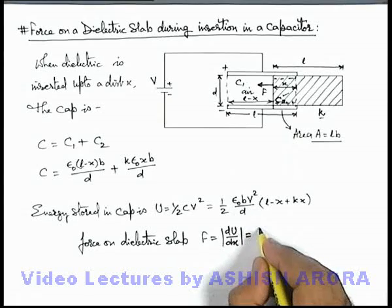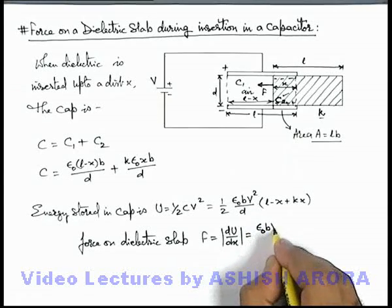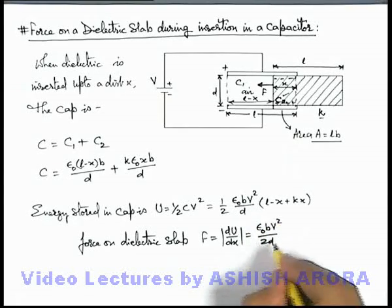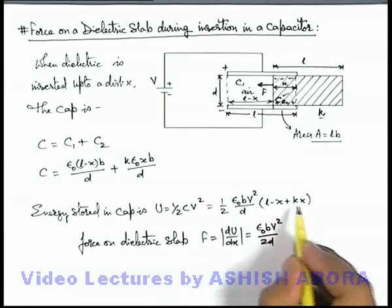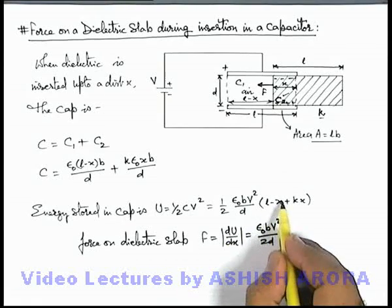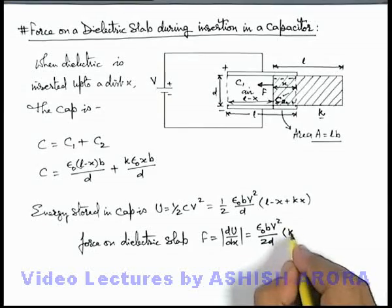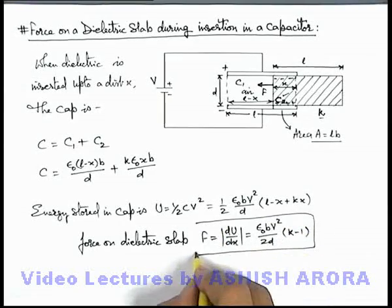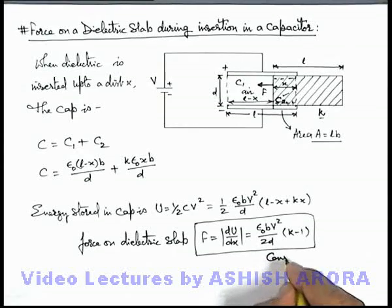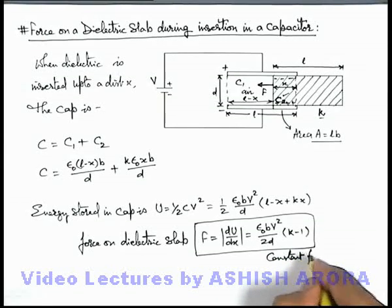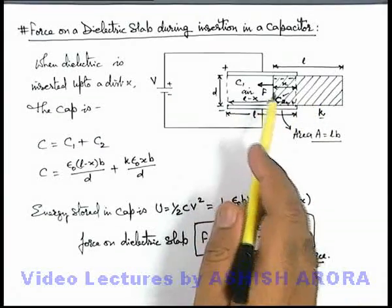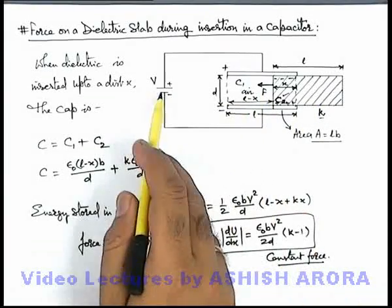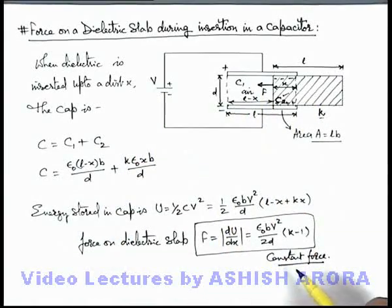If we differentiate it, you can see the result we are getting is epsilon not bV square by 2d. And differentiation of l becomes zero, and x becomes this minus 1 plus K, so it can be written as K minus 1. So this is the expression for the force, and you can see it is a constant force which is acting on the dielectric slab when it is inserted between the plates of a capacitor across a battery of potential difference V.